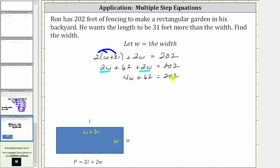The next step is to isolate the variable term by adding or subtracting, which means you need to undo plus 62 by subtracting 62 on both sides of the equation. Simplifying, 62 minus 62 is zero. The left side simplifies to four w. Four w is equal to 202 minus 62, which is equal to 140.